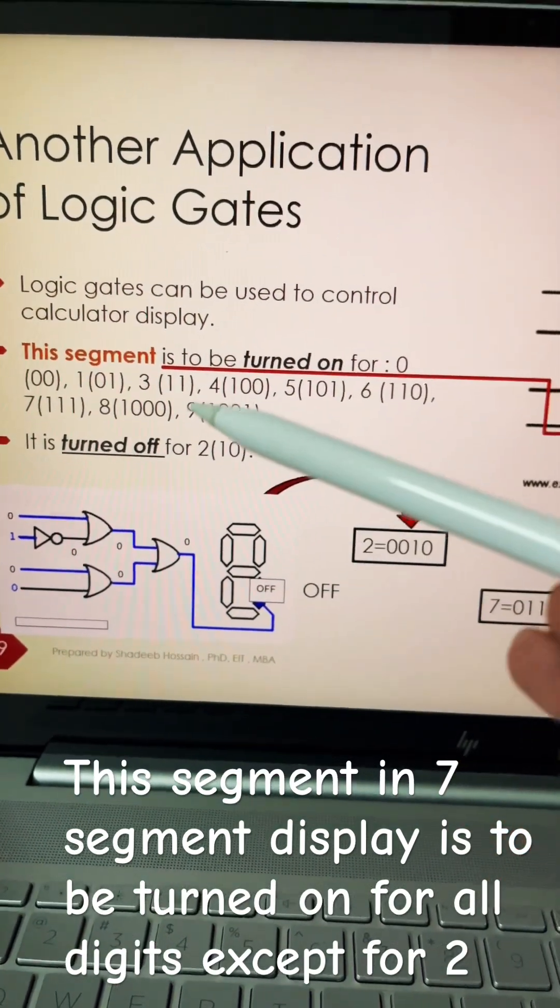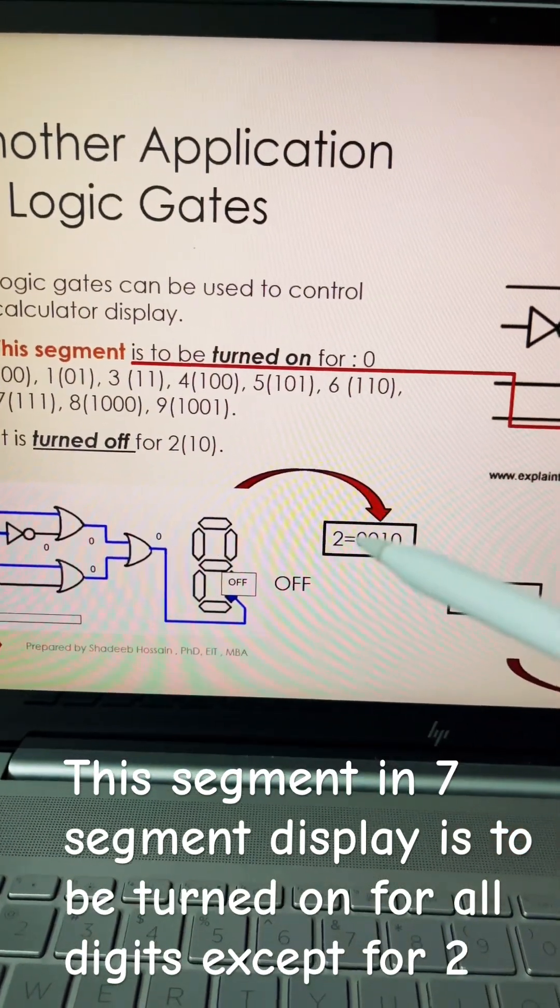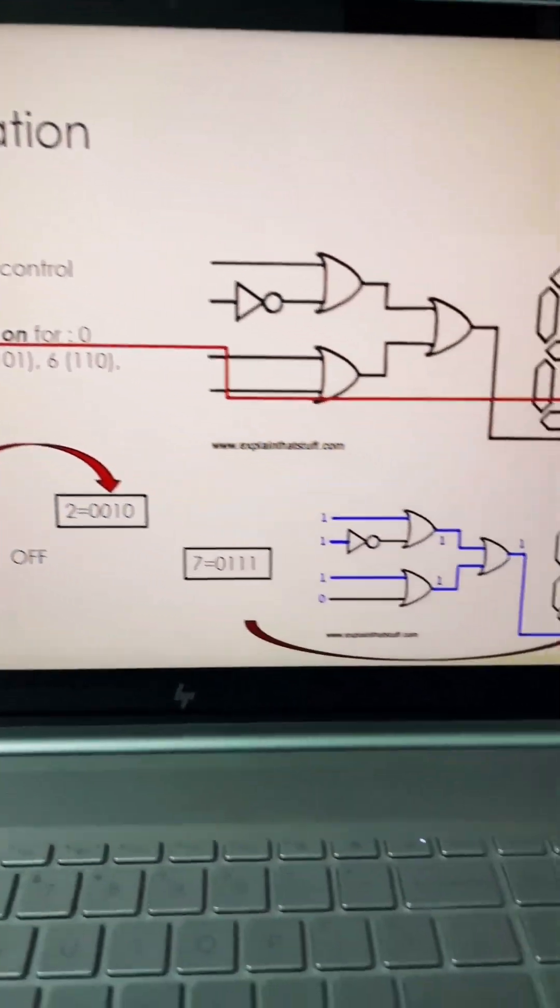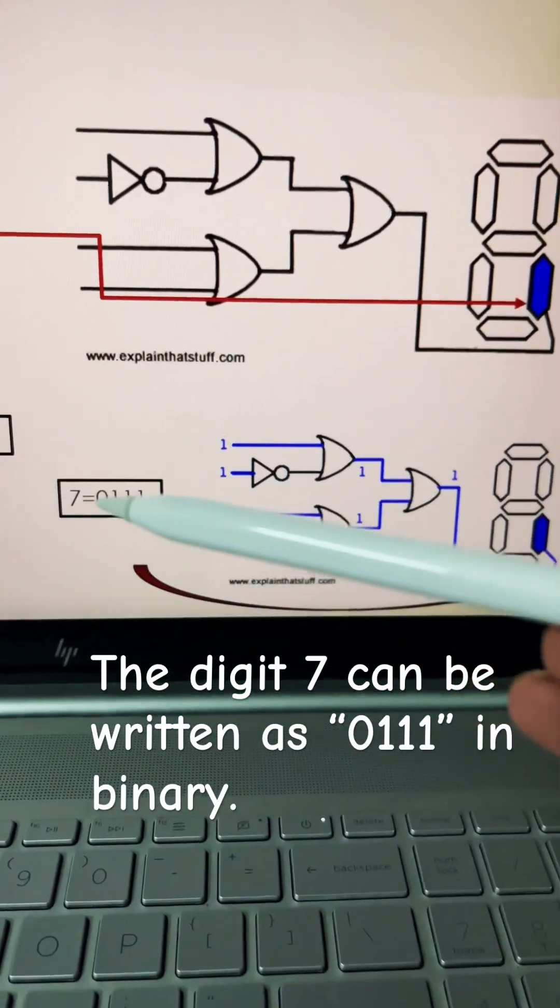However, it wouldn't be turned on for 2. Now, how do I know it's going to work like that? Let's take 7, for example.